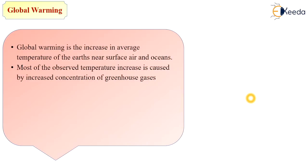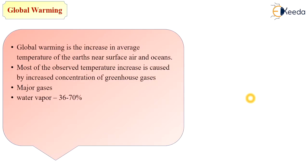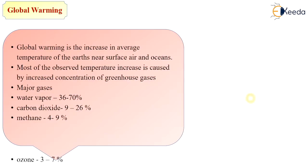We have already learnt about greenhouse gases in the previous topic on greenhouse effect. Briefly, the major gases involved are water vapour, which is available in a percentage of 36 to 70%. Carbon dioxide is one of the major greenhouse gases, available in the atmosphere at 9 to 26%. Methane is available at 4 to 9% and ozone at 3 to 7%.